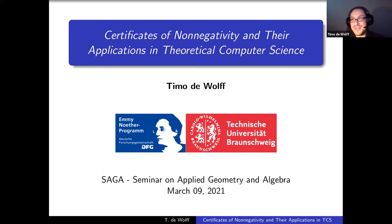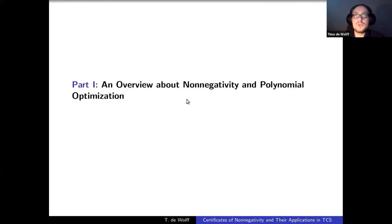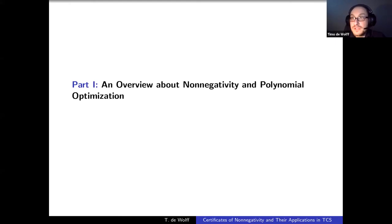Now I want to talk about certificates of non-negativity and their applications in theoretical computer science. This talk has two parts. The first part is a general introductory part, which I'll start now. The second part covers two more recent results joint with Mareike Dressler and Adam Kopisch. The first part assumes a general background — maybe you haven't worked on non-negativity or polynomial optimization before, so I want to give you a sense of what this is and what we do in our group.